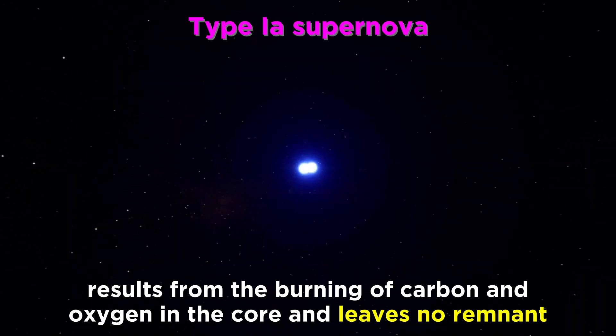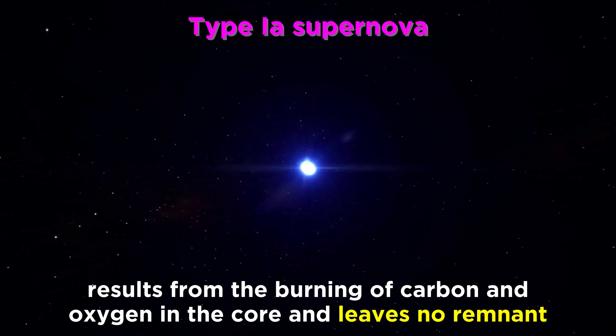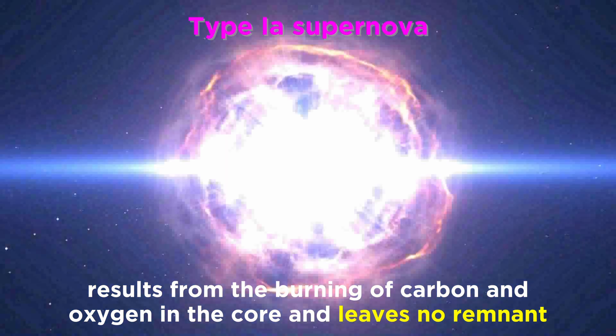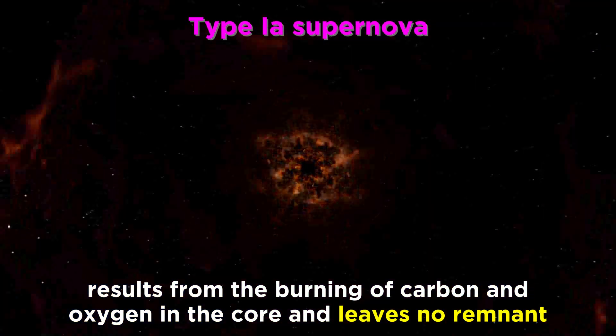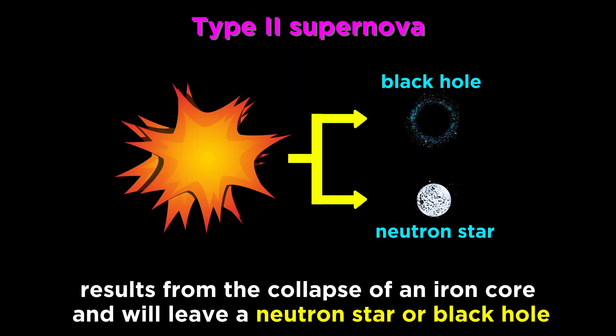If it is a type 1A supernova, meaning that it results from the burning of carbon and oxygen in the core, there will be no remnant. But if it is a type 2 supernova, meaning that it results from the collapse of an iron core, this will leave a remnant, like a neutron star or black hole.